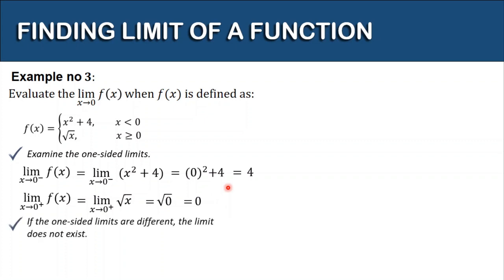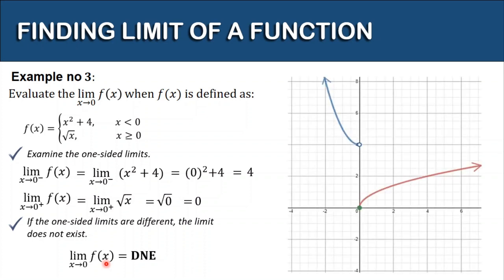Since the one-sided limits are different — 4 from the left and 0 from the right — the limit does not exist. Looking at the graph of this piecewise function: the part when x is less than 0 uses x squared plus 4, and the part when x is greater than or equal to 0 uses the square root of x. There is an open dot on the left piece because of the strict inequality, and a solid dot on the right piece. The graph shows a gap — the two parts are not connected — which is how a function looks when its limit does not exist.